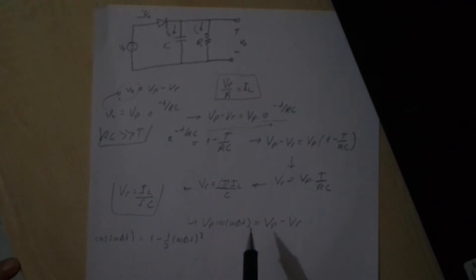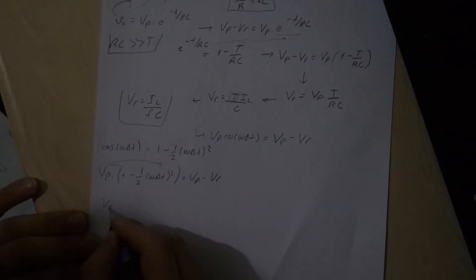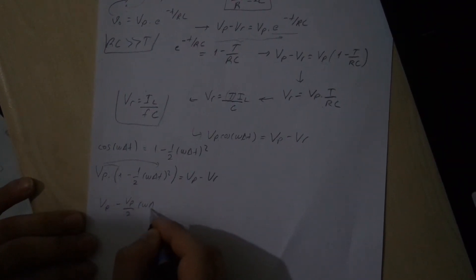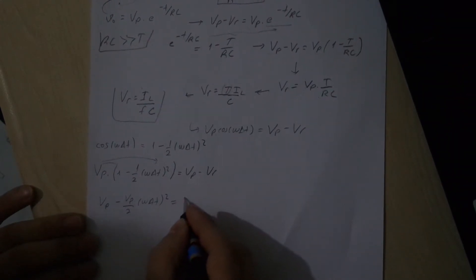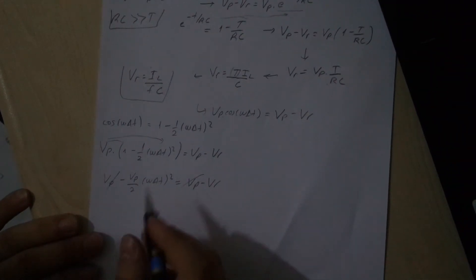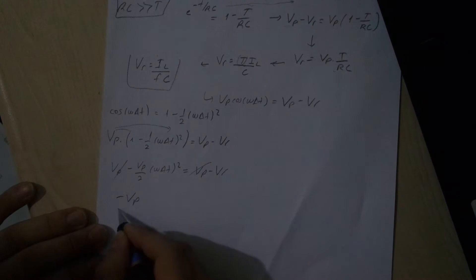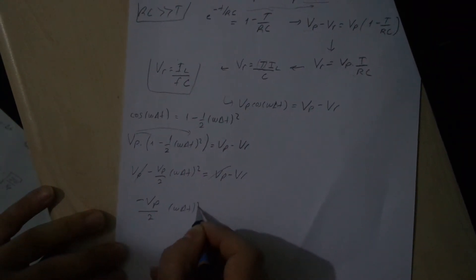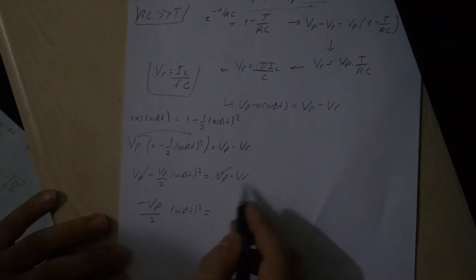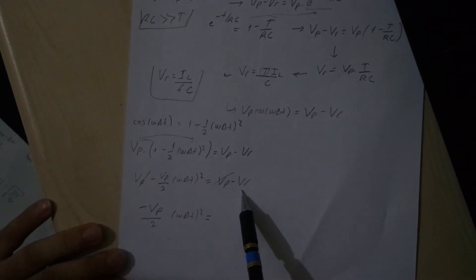Let's continue. VR value is known and VP is known. VP times (1 minus one-half omega delta t squared) is VP minus VR. When we do this process, VP minus VP over two times omega delta t squared equals VP minus VR. So VP times one-half omega delta t squared equals VR.